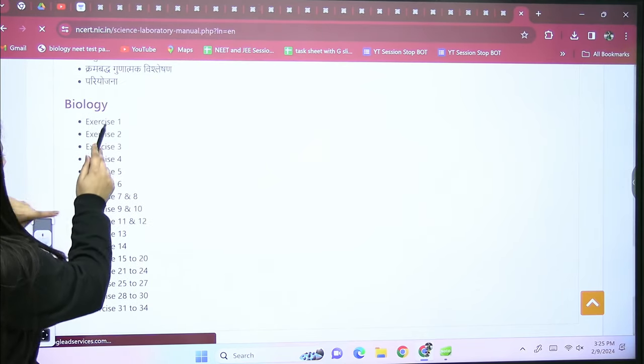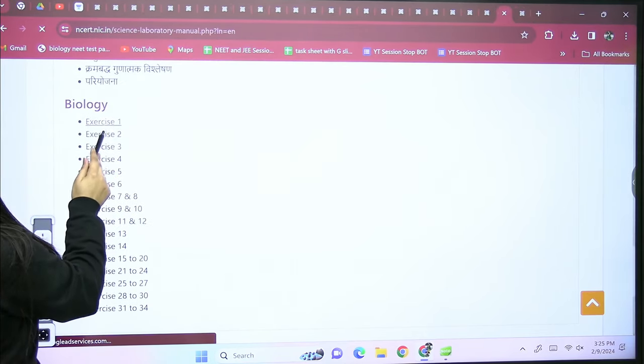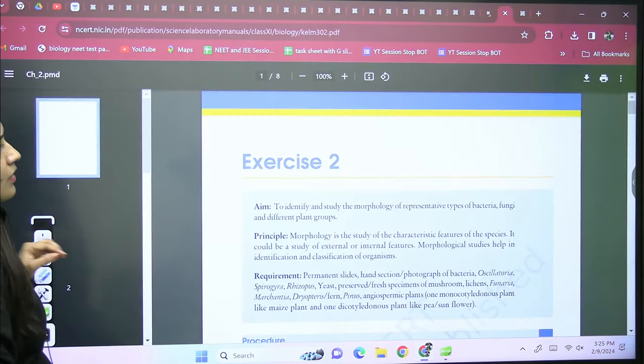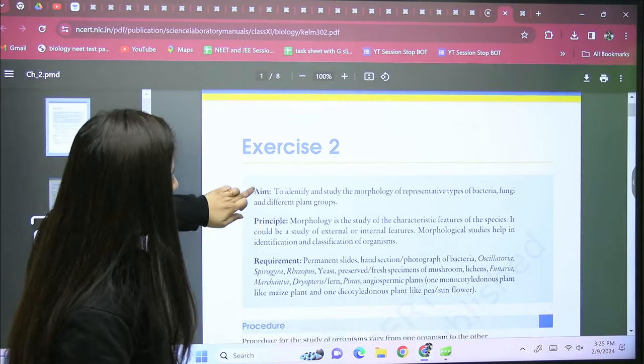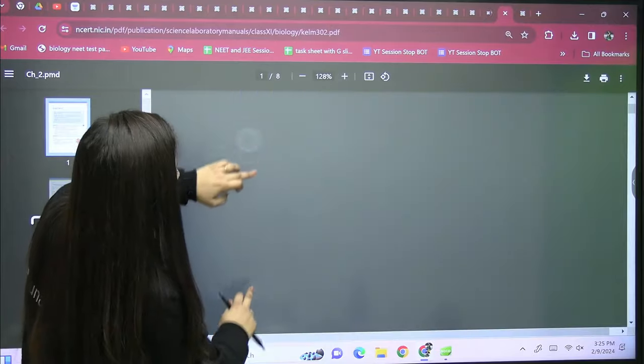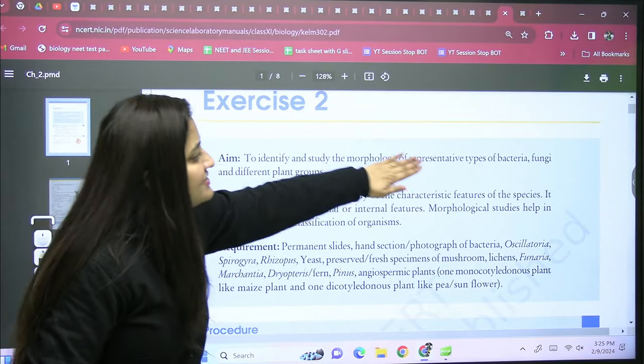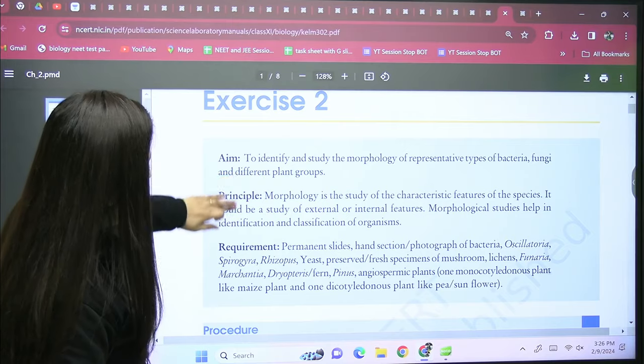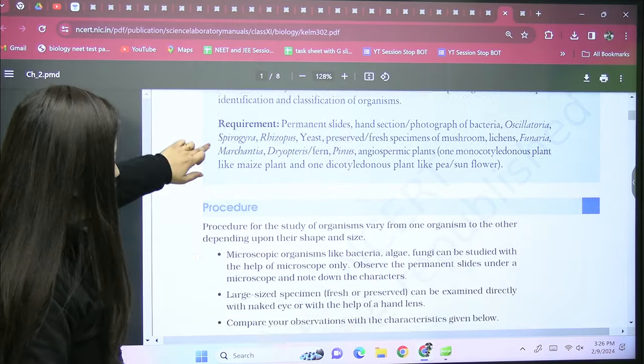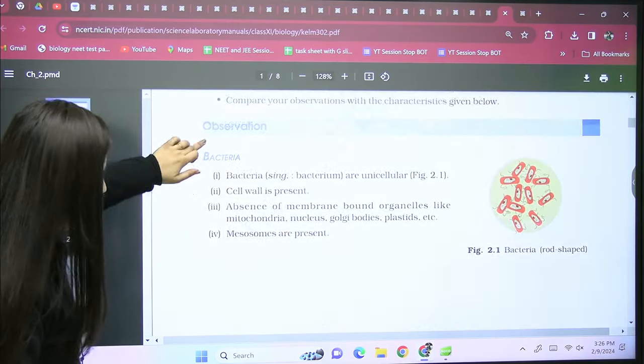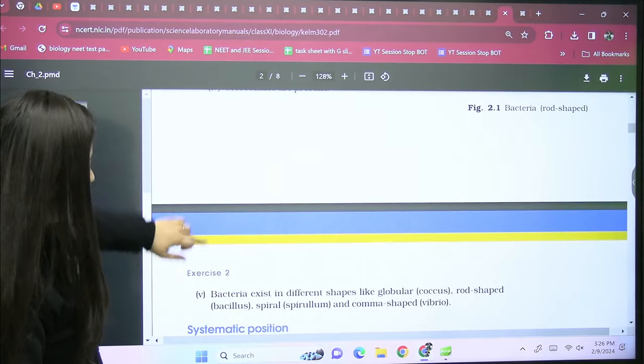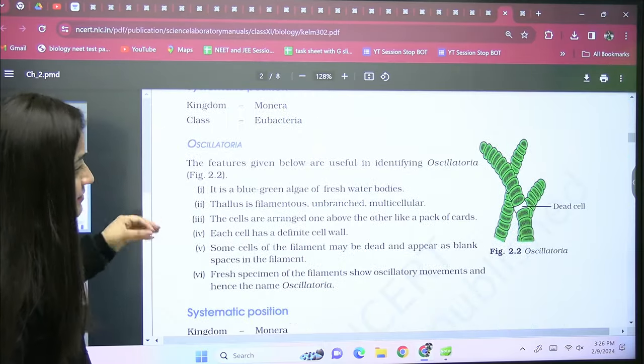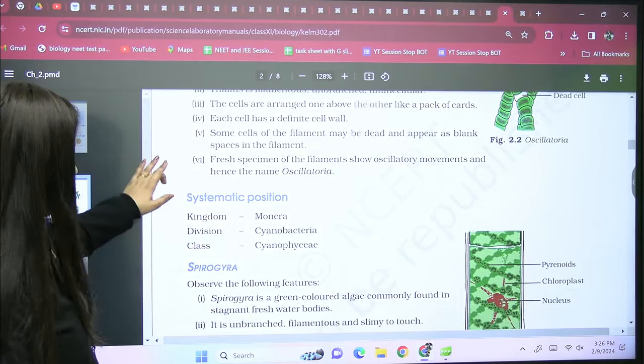You have to click on these different exercises. You will get the details - like I clicked on exercise two, so they are telling me to identify and study the morphology of representative types of bacteria, fungi, and different plant groups. Here, no doubt they have explained the procedure, they explained the points related to the bacteria, their systematic position, the examples are given. You all can see here.